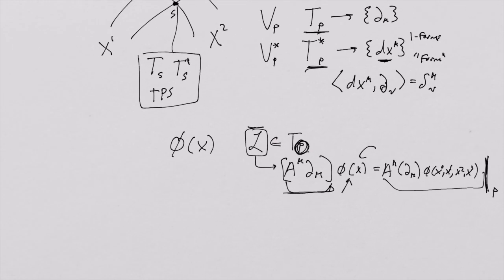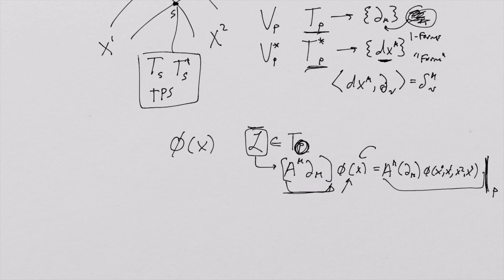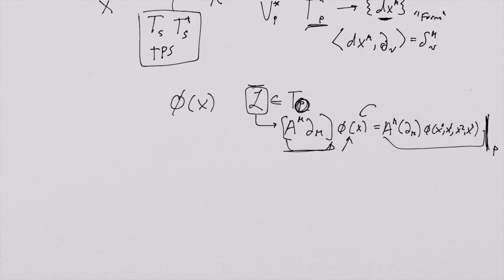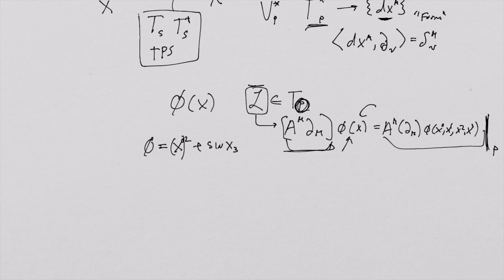It's important to understand that, otherwise this kind of looks like a bit of a cop-out where all we've done is rename e-mu to del-mu. But we're not just renaming it—we're actually applying some mathematical realization that's very useful. For example, say we took phi and made it x0-squared plus sine of x3, just picking an example.